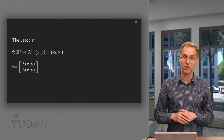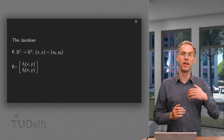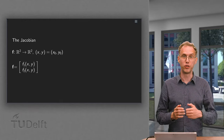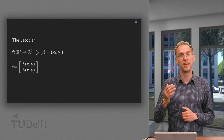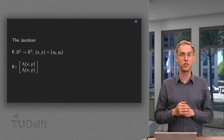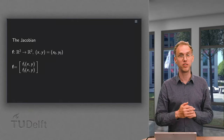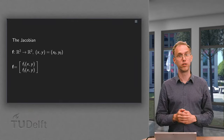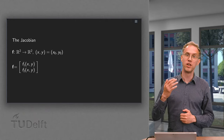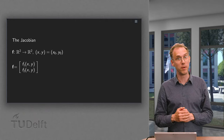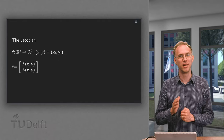When we linearize a vector function, we use the Jacobian matrix. The determinant of this matrix is called the Jacobian. This Jacobian is used when we make a change of variables in double or triple integrals — for example, when we use polar coordinates or spherical coordinates. So what is this Jacobian matrix and how do we compute the Jacobian?